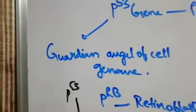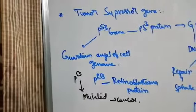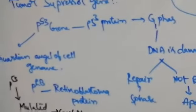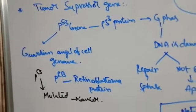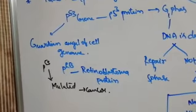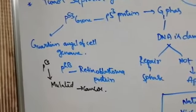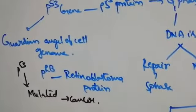Similarly, PRB retinoblastoma protein is also present. By the same mechanism, it also prevents DNA damage and mutation. If it itself is mutated, then it causes cancer.